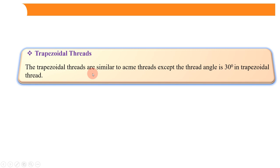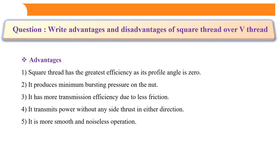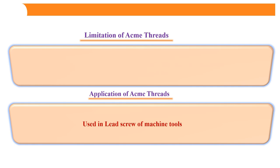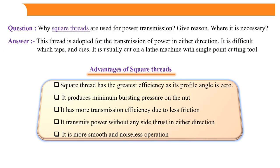The next thread type is trapezoidal threads. Trapezoidal threads are just similar to Acme threads. The only difference is that the angle between threads is 30 degrees in trapezoidal threads, whereas the thread angle in Acme threads is 29 degrees. That is the only difference between trapezoidal threads and Acme threads; otherwise, the rest is similar. This covers the types of thread profiles used for power screws, their advantages, disadvantages, and limitations. I hope this content is helpful for you to understand the various advantages and disadvantages of thread profiles. Thank you.